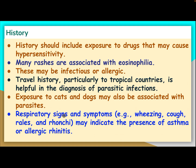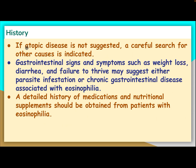Respiratory signs and symptoms — wheezing, coughing, rales, and rhonchi — may indicate the presence of asthma or allergic rhinitis. If atopic disease is not suggested, a careful search for other causes is indicated.